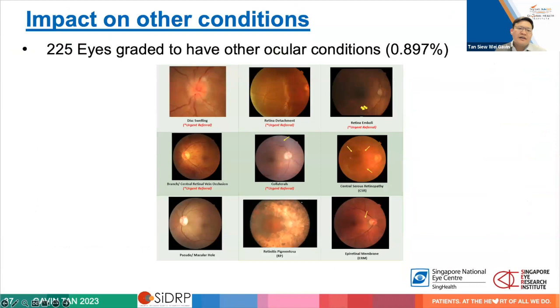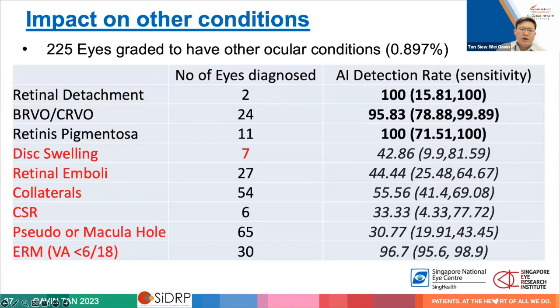We also looked at the impact on other conditions, because this algorithm wasn't designed to detect everything. We also learned that even if you build a newer, slightly better algorithm, you can't implement it straight away — you need to go through the whole regulatory process again. We found that for most vision-threatening conditions, the AI still detected abnormalities, because it was looking for features of normal versus gradable images — so pathological processes with imaging features similar to diabetic retinopathy would generally be picked up and referred.